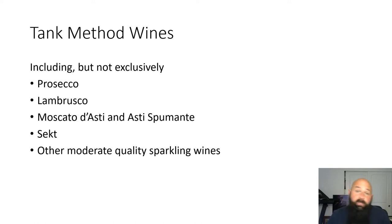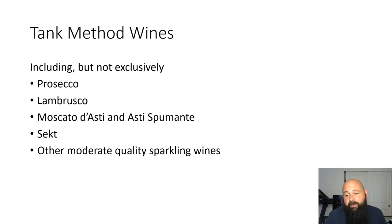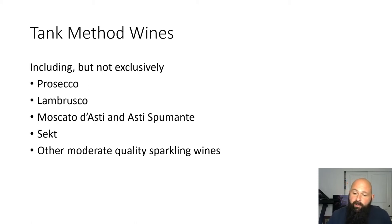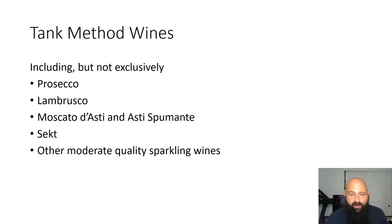Tank method wines are quick to turn around — you can go from crush to secondary fermentation to bottle within about three months. The fastest I've ever done a tank method with a little forced carbonation was 22 days crush to glass. From a cash flow perspective, that's far better than traditional method, which takes years and years.